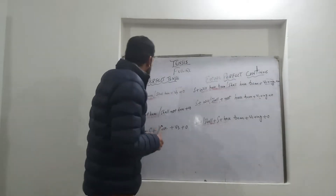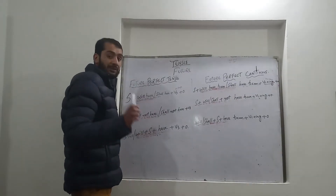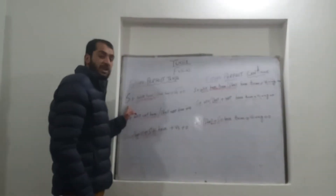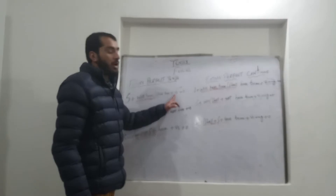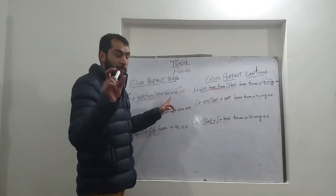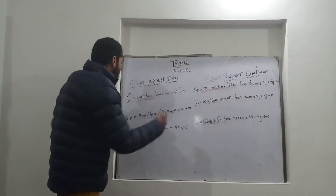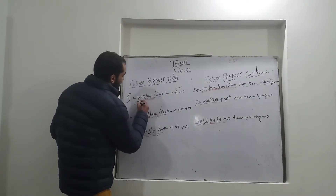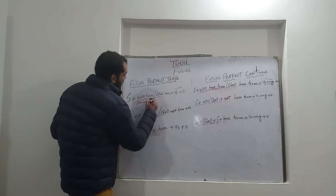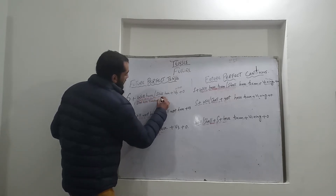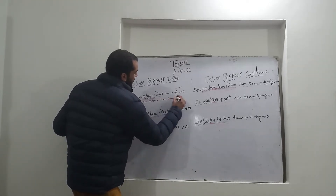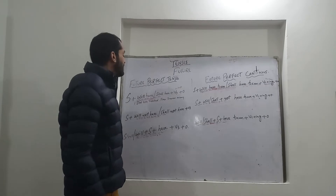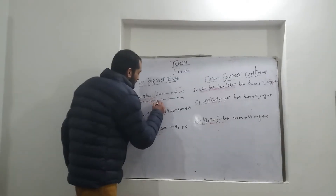The structure is very simple. For positive sentences: subject plus will have or shall have plus verb third form — that is, past participle (PP) — plus object. For example: I shall have reached there tomorrow evening. Here, 'reached' is the past participle form of 'reach.'